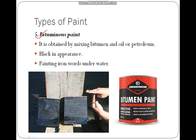Then there is bituminous paint, which is very black in colour. It is obtained by mixing bitumen and oil or petroleum. It is used for painting ironworks underwater. As you can see in this picture, it is painted with black bituminous paint. Ormanot is one of the companies supplying bituminous paint.